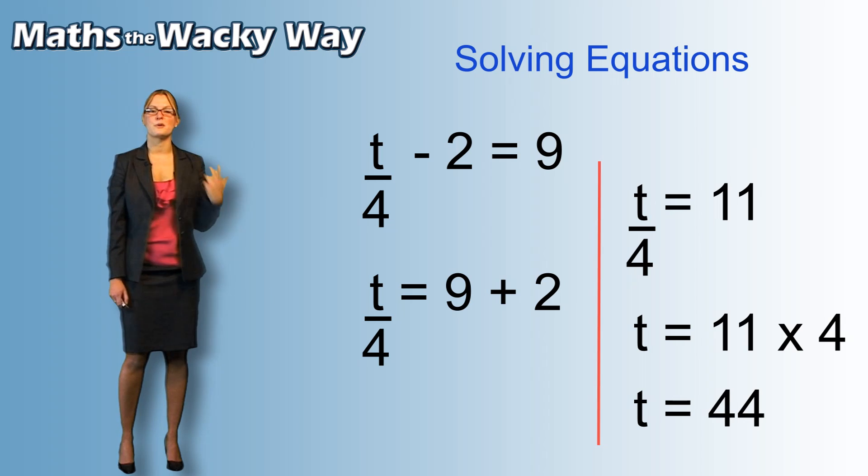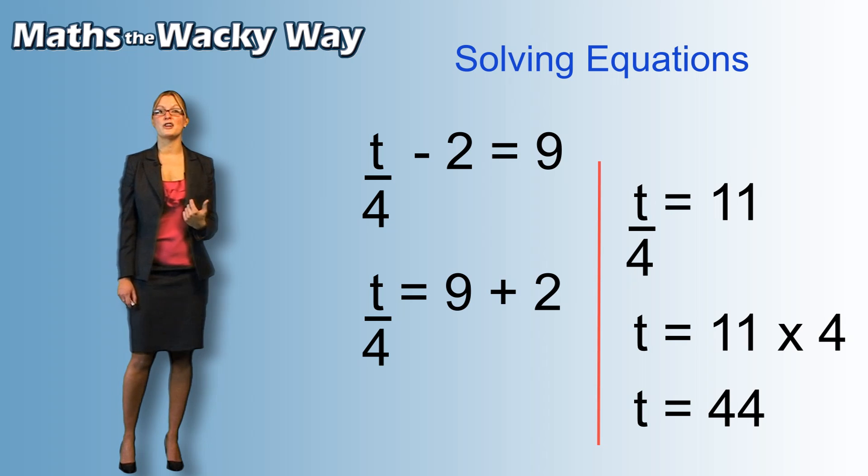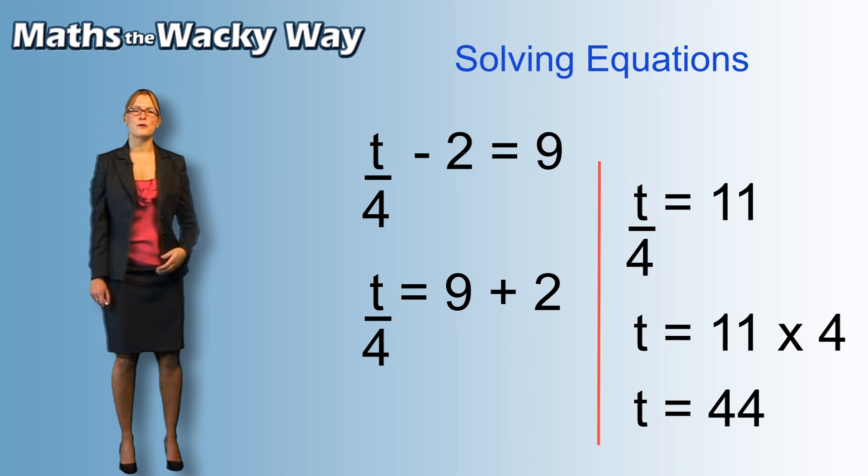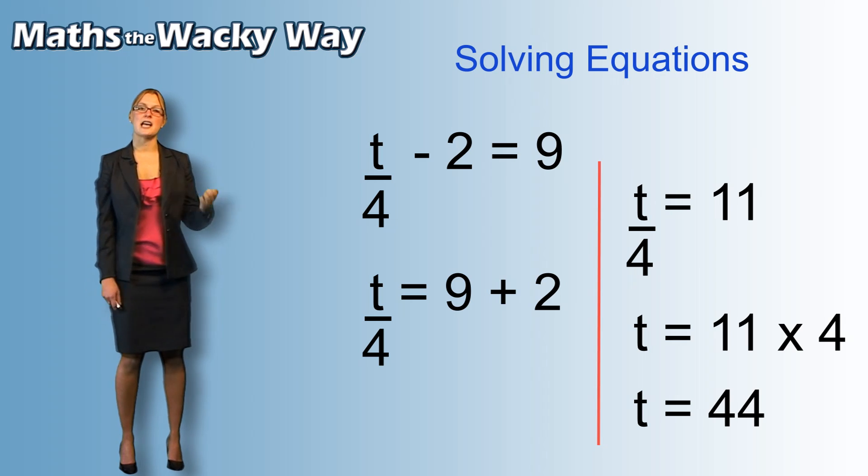Now if you think back to what we had when we started, let's just check it. So, t, our unknown, we now know is 44, 44 divided by 4, well that's 11, take away 2, that's 9. So it works.